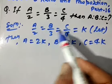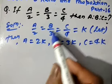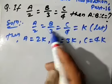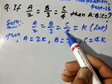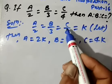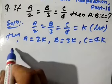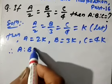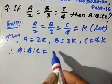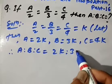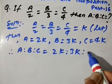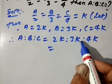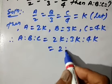So a is to b is to c is equal to 2k is to 3k is to 4k. Dividing each term by k, we get 2 is to 3 is to 4. That is the answer from the first method.